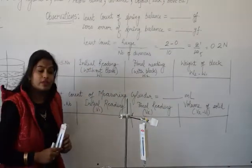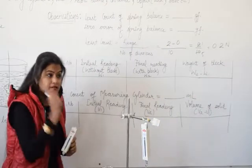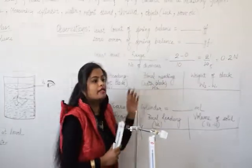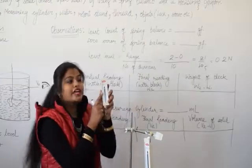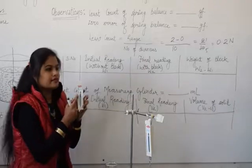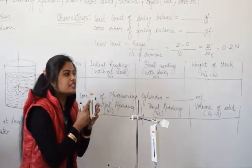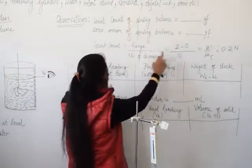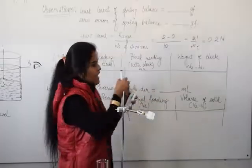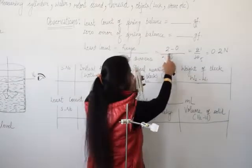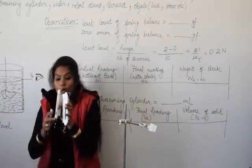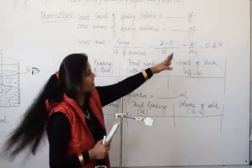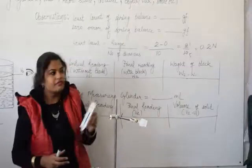After that least count. How to calculate least count? Least count is the least measurement which we can measure from this instrument. So least count is range upon number of divisions. You can see here the range of the spring balance which I am holding here is zero to one. So how will you calculate range? Initial is zero, final is one, so one minus zero. Here I am having this spring balance. It is having zero to two. So two minus zero upon the number of divisions. Both spring balances have different least count. We calculate it here as 0.2 Newton. Or we can take it in gram also.